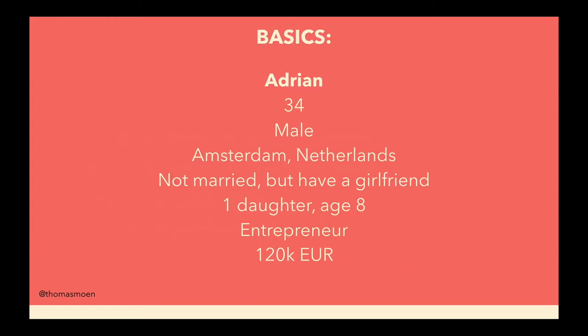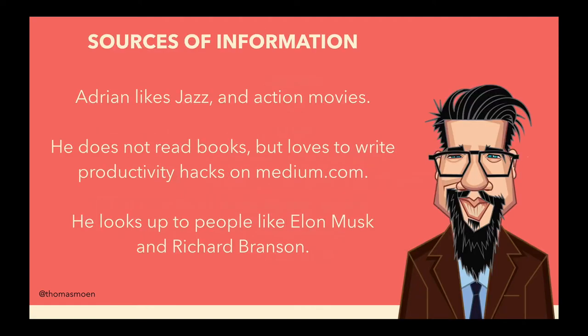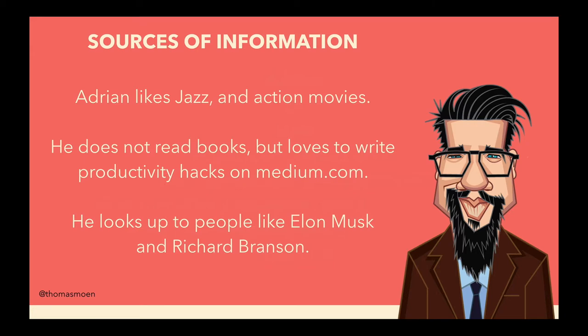Let's go through one of my avatars. My avatar's name is Adrian. Adrian is a 34-year-old male who lives in Amsterdam in the Netherlands. He's not married but has a girlfriend, and he has one daughter, age eight. He's an entrepreneur with his own store in Amsterdam, and he makes around 120,000 euros a year — a decent income. Adrian loves to listen to jazz, he likes action movies, he's not a big reader of books, but he loves to write productivity hacks on Medium.com. His mentors are people like Elon Musk and Richard Branson — big business figures who work a lot.